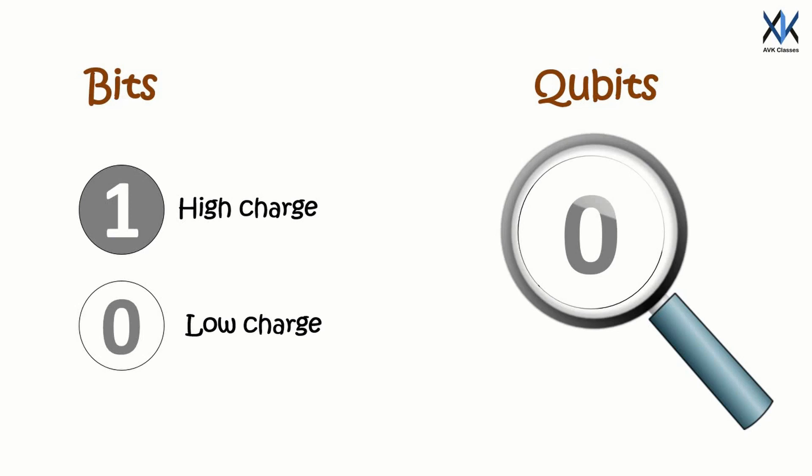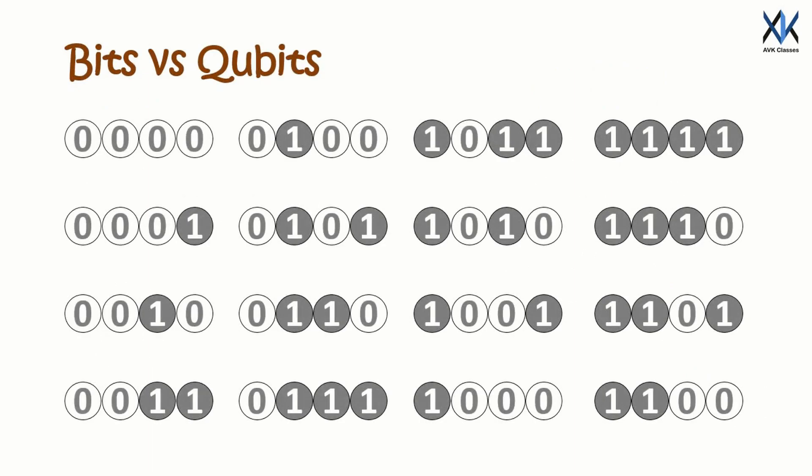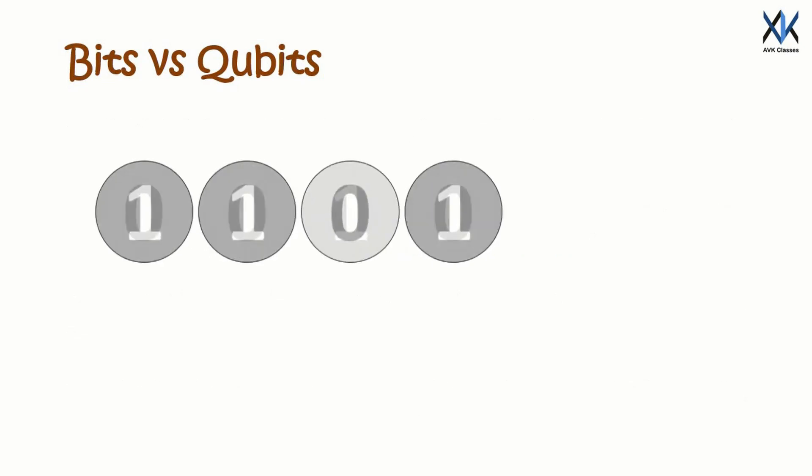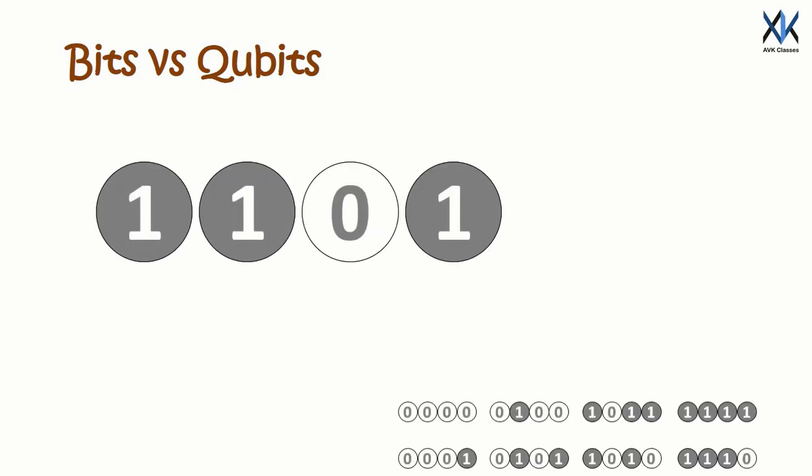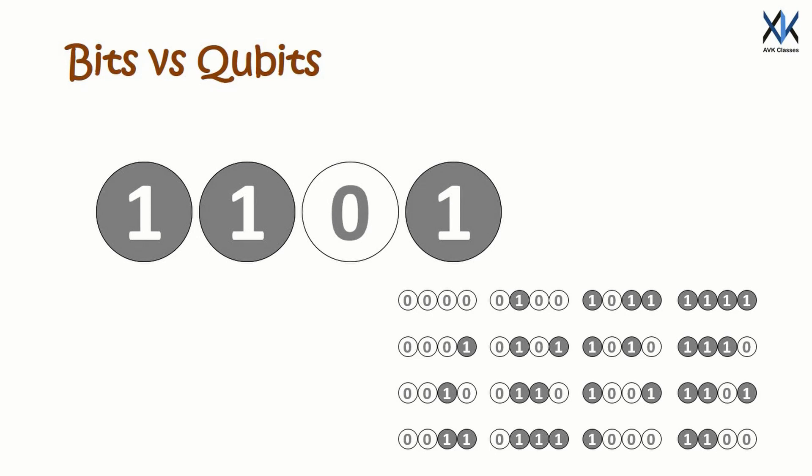Now superposition is a game changer. Consider a 4 bit information. It can take one of the following 16 combinations. Thus using 4 bits we can define only one of the 16 possibilities. But if you have 4 qubits instead of regular bits, we can have all the 16 possibilities at the same time. That means you can store a vast amount of information by just using fewer qubits.